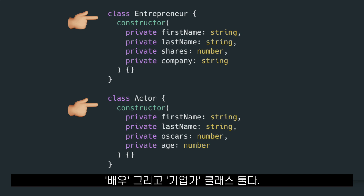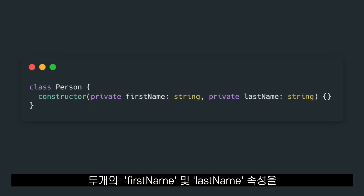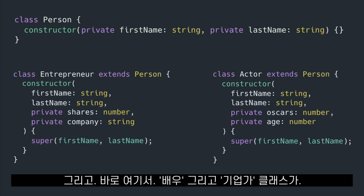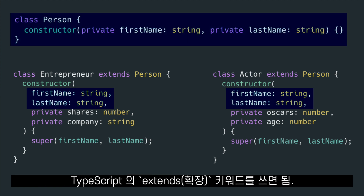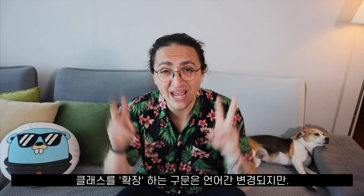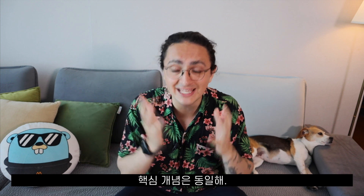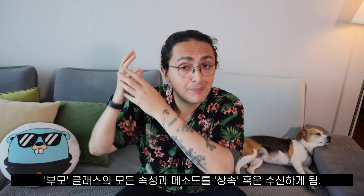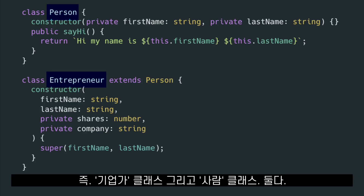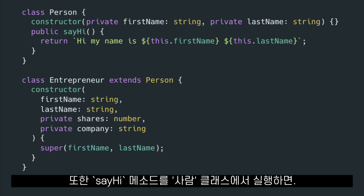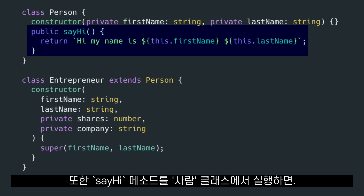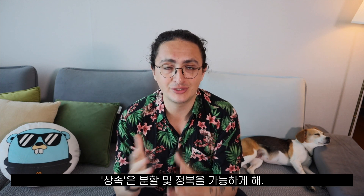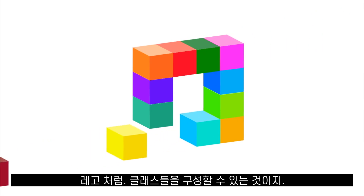Using inheritance, since we know that the entrepreneur and the actor classes both need a first name and a last name, we can move those duplicate properties — first name and last name — to another class called person. Then we can say that both entrepreneur and actor inherit the first name and last name from the person class. We do this by using the extends keyword in TypeScript. The syntax to extend a class changes between languages, but the concept is the same. By extending a class, the child class will inherit all the properties from the parent class. This means that if we implement the say hi method in the person class, both our entrepreneur and our actor classes will also be able to say hello. Inheritance allows us to divide and conquer — we can divide our classes into small pieces and compose them as if they were Lego blocks.